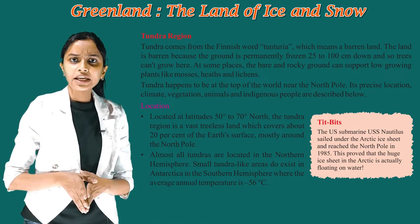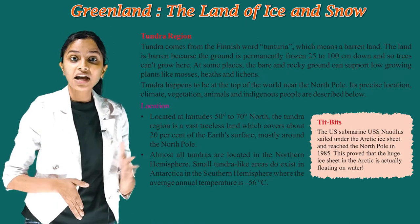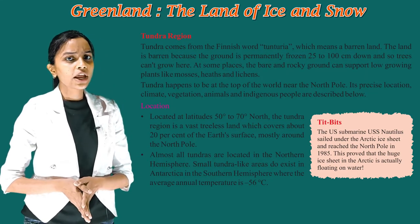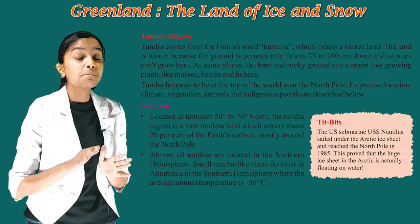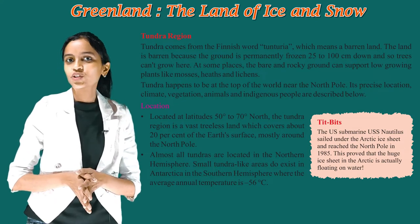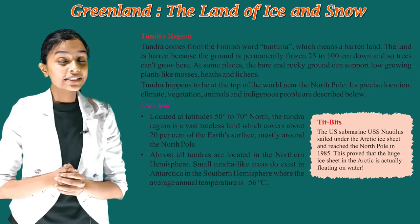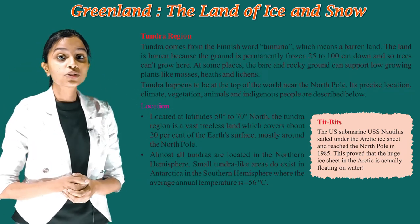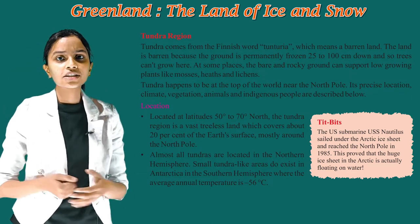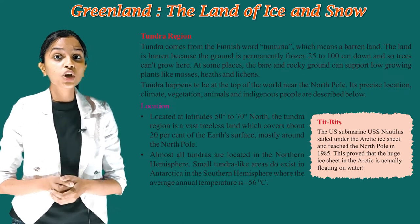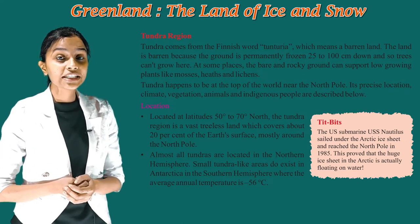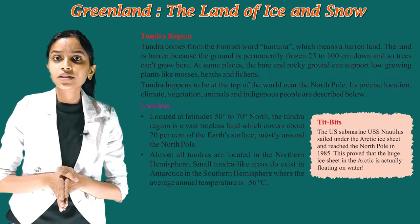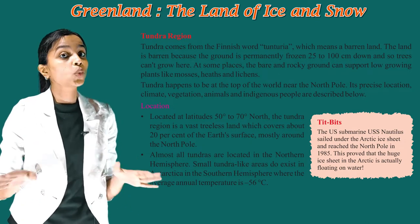Small Tundra-like areas do exist in Antarctica in the southern hemisphere, where the average annual temperature is minus 56 degrees Celsius. Now children, it's time for tits and bits. The US submarine USS Nautilus sailed under the Arctic ice sheet and reached the north pole in 1985. This proved that the huge ice sheet in the Arctic is actually floating on water.